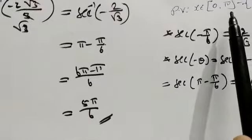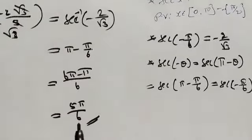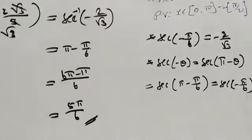Therefore, the principal value of sec inverse of minus 2 root 3 by 3 is 5 pi by 6. Thanks for watching.